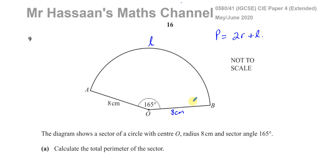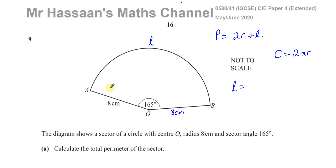We already have the radius. To find the length of the arc, we note that this arc is a fraction of the whole circumference. The circumference of a circle is given by 2πr. We're not interested in the whole circumference, but a fraction — specifically, the angle theta over 360 degrees times 2πr.